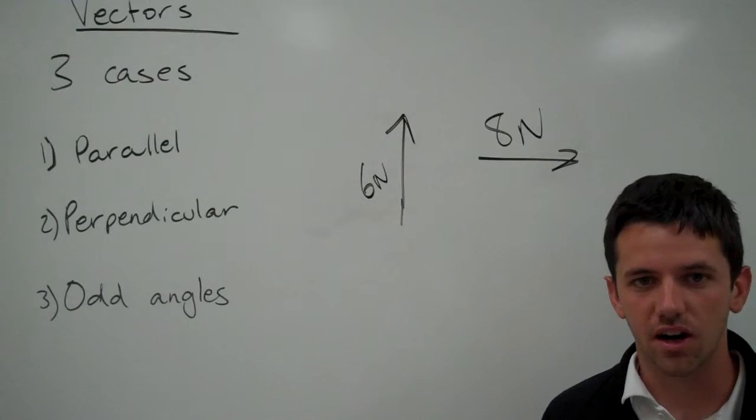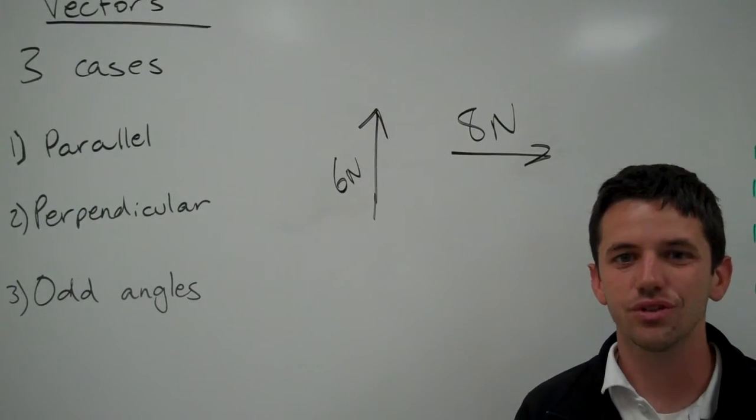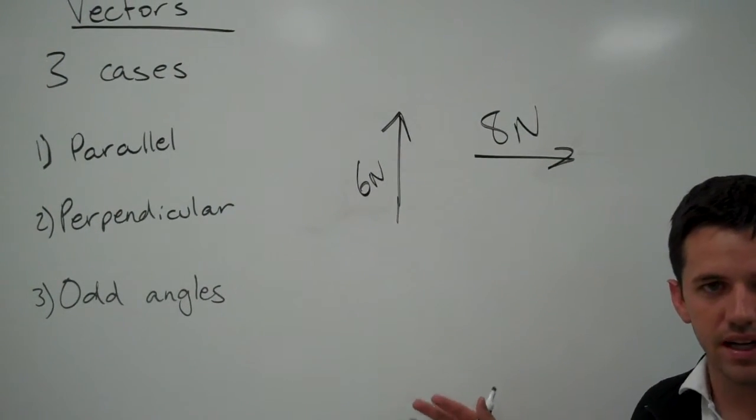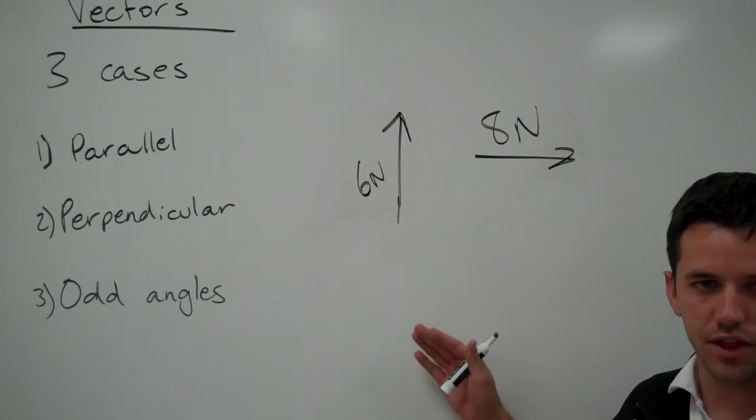The way we combine vectors that are perpendicular is using triangles. We're going to have to set these up into a triangle and figure out what the third side is.